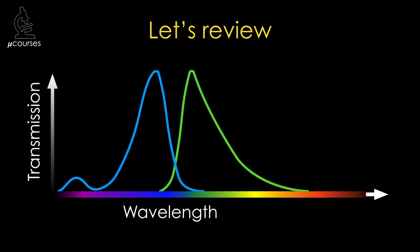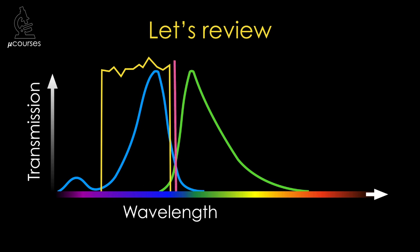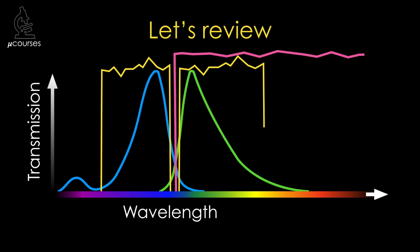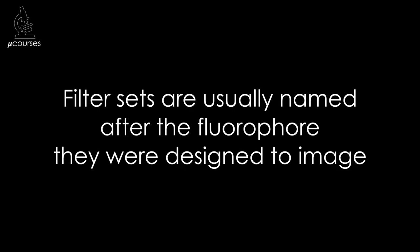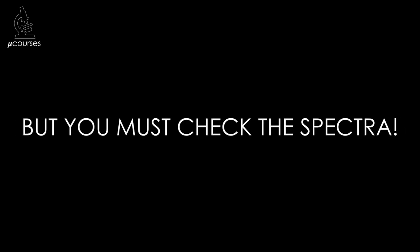Let's review what we've learned. An excitation filter should be chosen that transmits the peak excitation wavelengths. A dichroic beam splitter should be chosen that reflects the excitation and transmits the emission. An emission filter should be chosen that transmits the peak emission light. Filter sets are usually named after the fluorophore they were designed to image, but similarly named fluorophores can vary in their spectral properties, so you must always check the spectra.